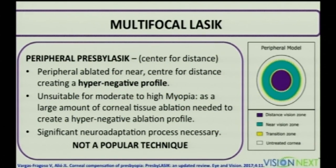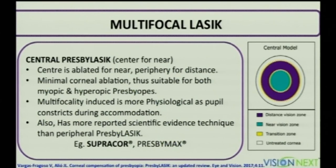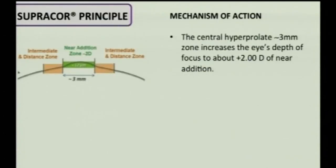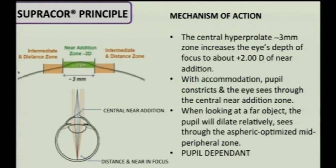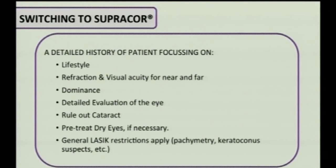Multifocal LASIK with center-for-distance is not very popular because it requires a lot of neuroadaptation. Central presbyLASIK targets the center for near and the periphery for distance — minimal corneal ablation suitable for both myopic and hyperopic patients. Multifocality is induced in a physiological, pupil-based manner: a central hyperprolate corneal zone of 3 mm increases depth of focus by about 2 diopters for near addition. When accommodating, the pupil constricts and the patient sees through the central hyperprolate region; for distance, the pupil dilates and the patient uses the aspherically optimized mid-peripheral zone.